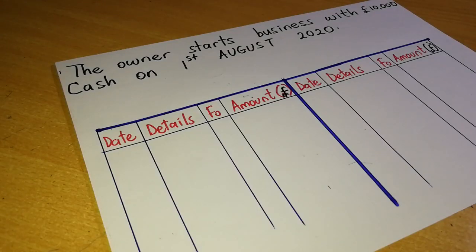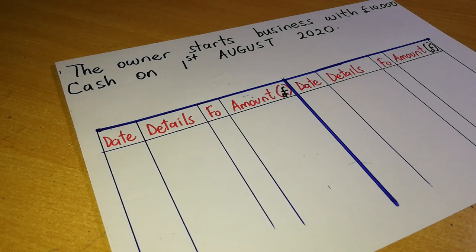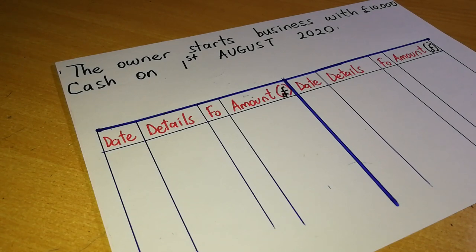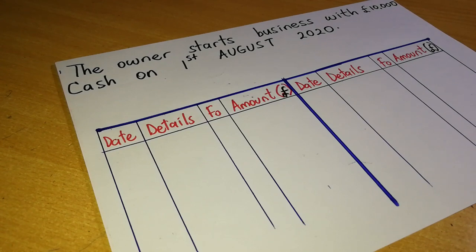When dealing with double entry, just like when looking at transactions affecting the accounting equation, we first look at the transaction and identify what happened. We need to identify the two accounts that are affected in every transaction. After identifying those two accounts, we go ahead and make the appropriate double entry following our double entry rules.